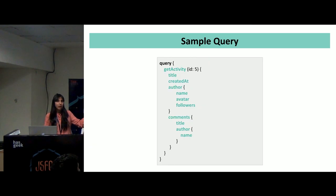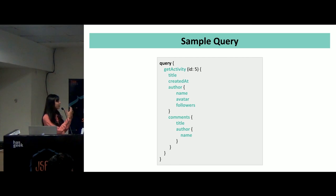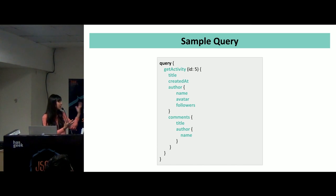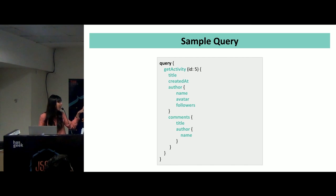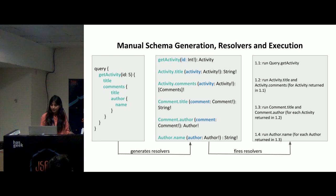This is exactly how a sample query looks in GraphQL. I have this get activity or get post query, wherein I exactly ask for the information I need — for example, I ask for the title, the created date, and the author's information in that single API query, giving me the name of the author, the path which is the profile image, and the number of followers. In this single query, I also ask for the comments and the title of those comments, and the name of the author who created those comments. GraphQL beautifully supports this data nesting.